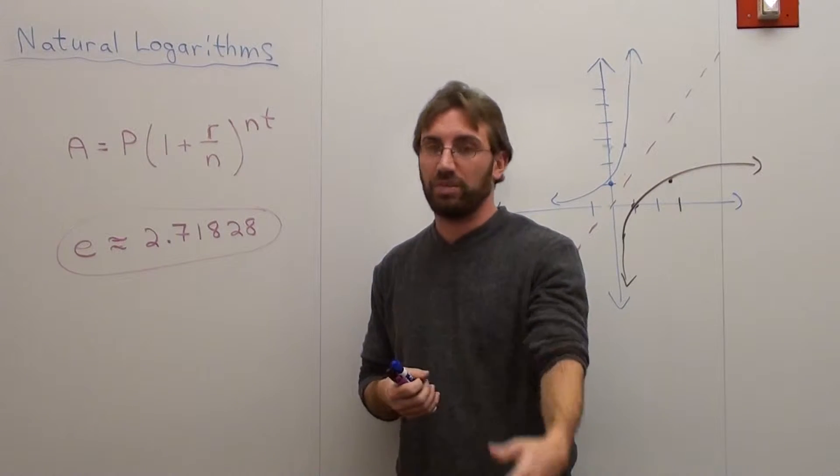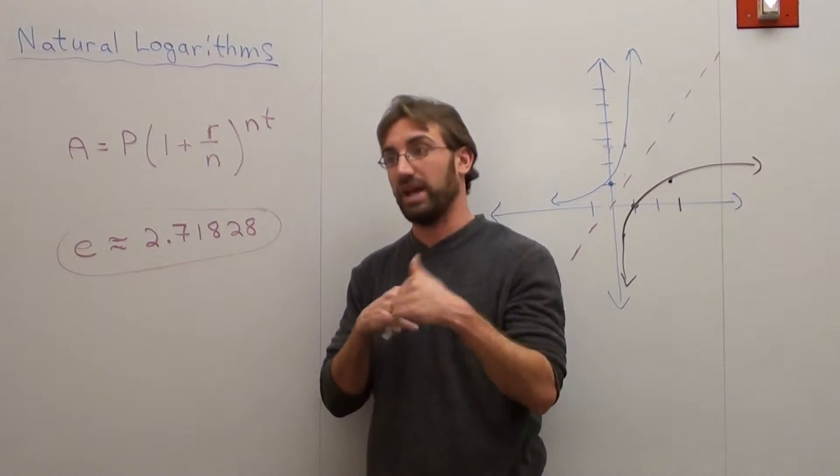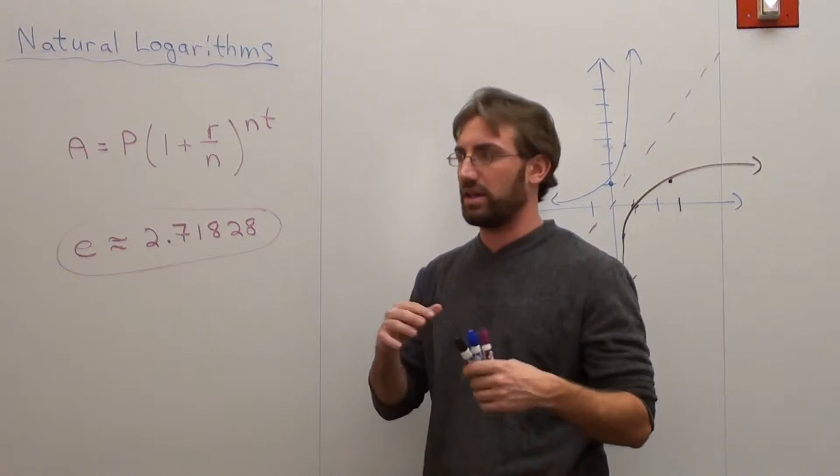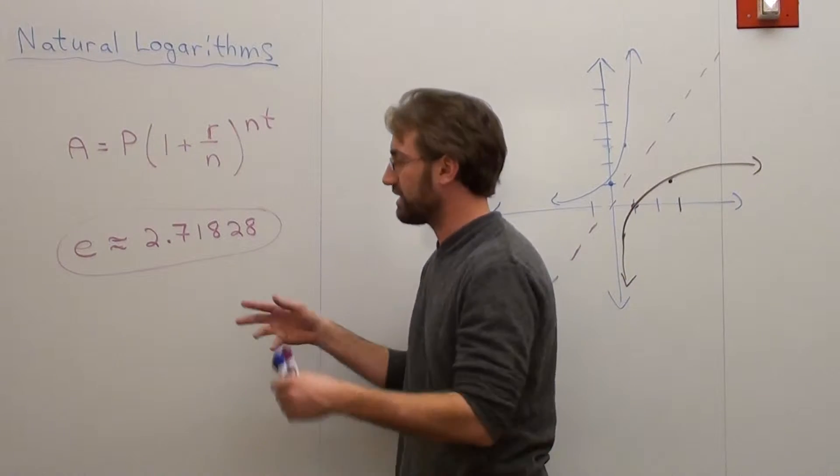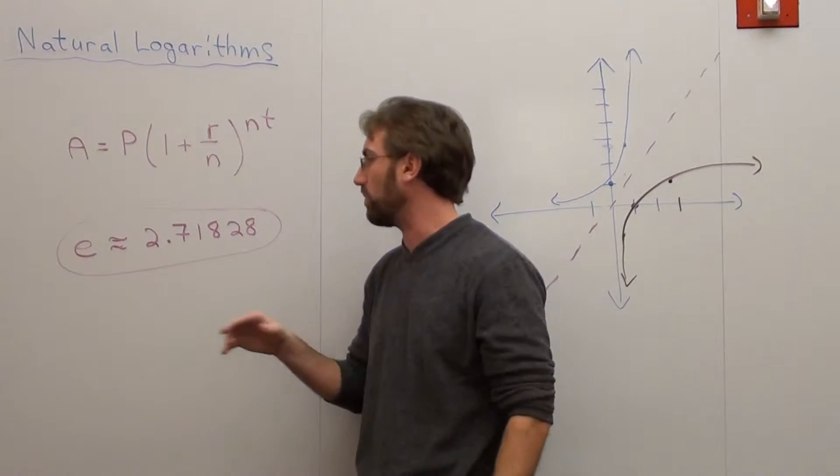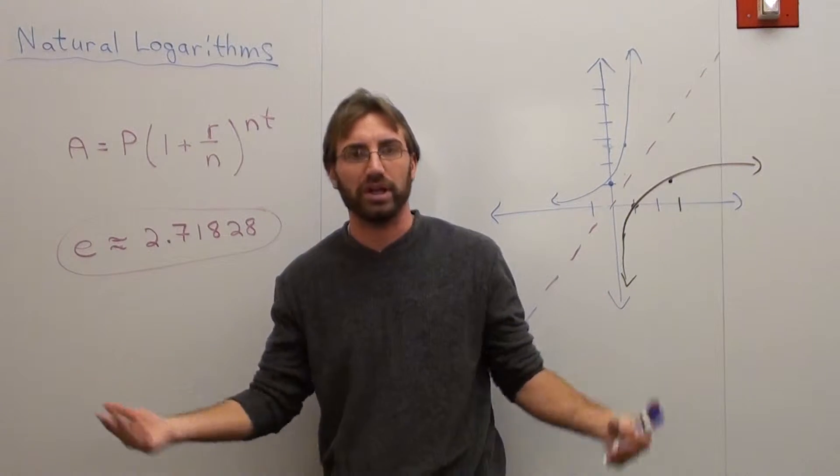They follow a very similar pattern of logarithms, except with natural logarithms you have something called base e. And e is an irrational number in mathematics. Irrational means it just goes on forever and ever, but it has this striking correlation that's really quite cool. And it's approximately 2.71828, and it keeps going and going.